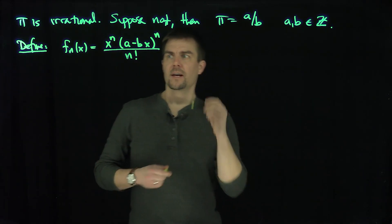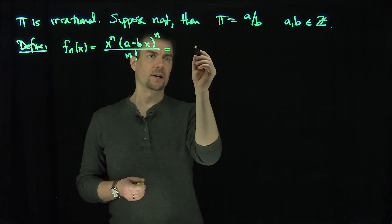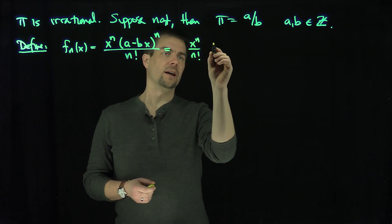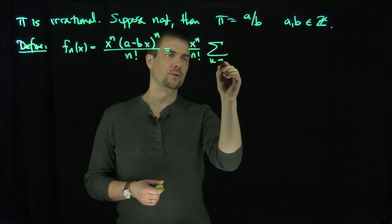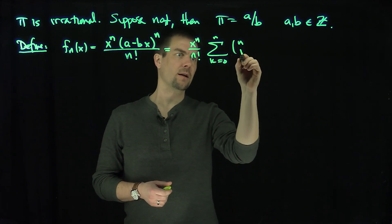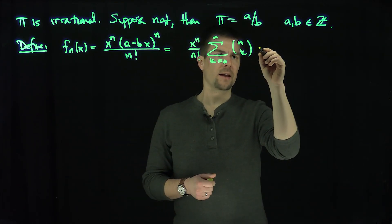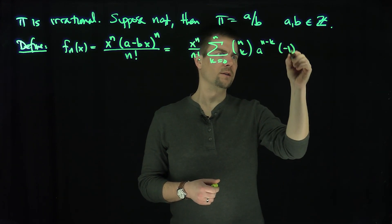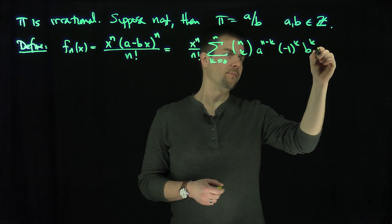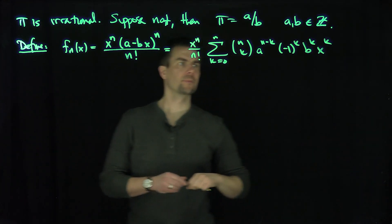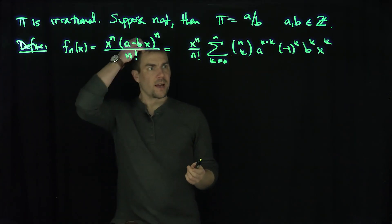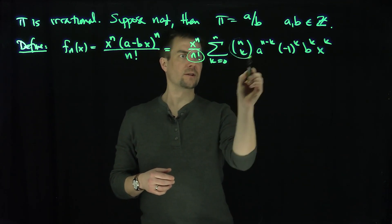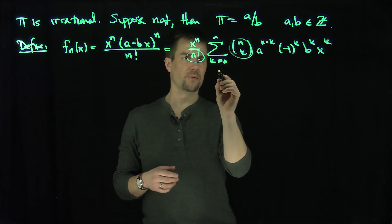The first thing we can observe is that if I write this, I can write this as x to the n over n factorial. Then I can binomially expand this: k goes from zero to n of n choose k, and then I can have a to the n minus k, then negative one to the k, b to the k, x to the k. Now remember, a and b are integers.